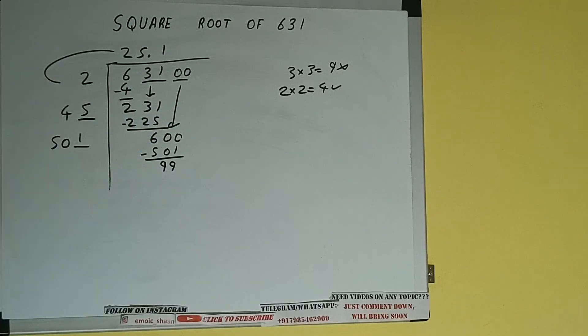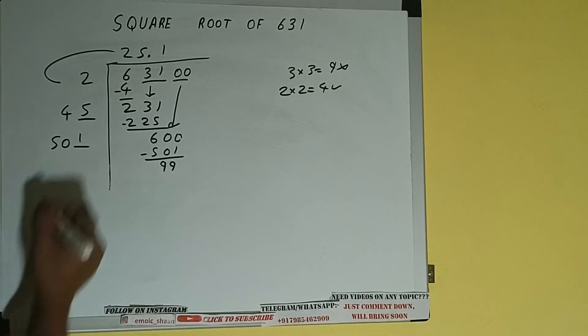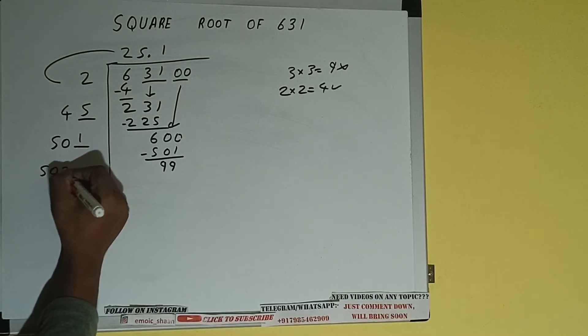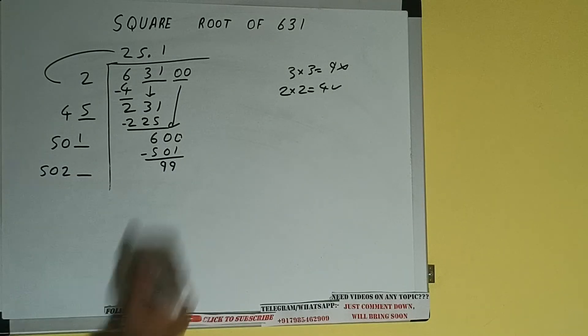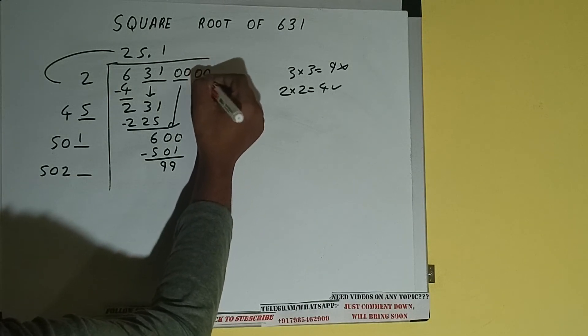Now 501 into 1, so add both, so 501 plus 1 will be 502, write it here and keep our digit extra. This number we need to make it big, so bring the next pair of zeros down.